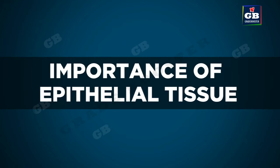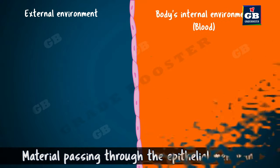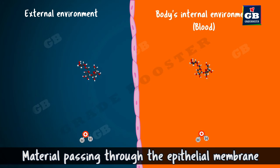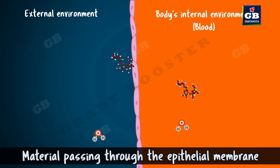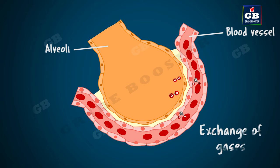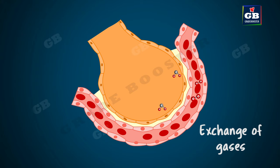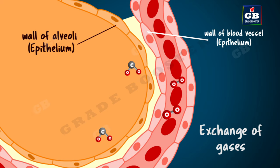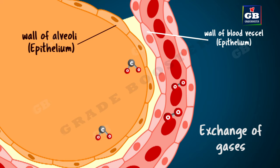Let's see the importance of epithelial tissue. Anything from the outer atmosphere that has to enter our blood, or anything that has to leave our blood, should pass through the epithelium at least once. For example, the alveoli is the part of the lung where the exchange of gases takes place. Oxygen from the air we breathe in enters the blood, and carbon dioxide in the blood comes into the alveoli — crossing the walls of alveoli and blood vessel. The wall of alveoli and the wall of blood vessel are made up of a single layer of epithelial cells. So the epithelium plays an important role in regulating the exchange of materials between the body and external environment.